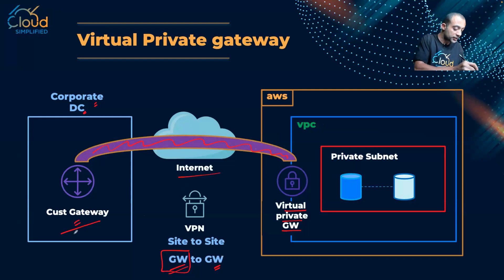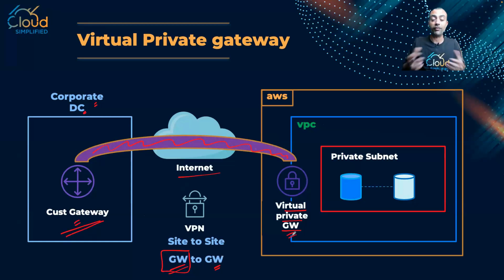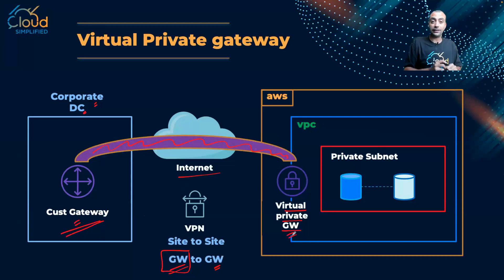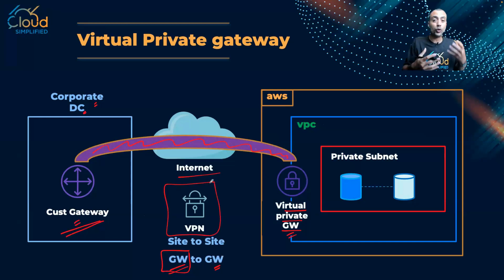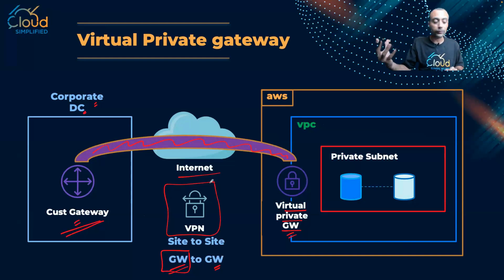From one side I encrypt the data, from the other side I decrypt it, and it works vice versa as well. So the first option for connecting my corporate data center to my VPC is the VPN — gateway-to-gateway communication from the customer router or firewall to the virtual private gateway on AWS.